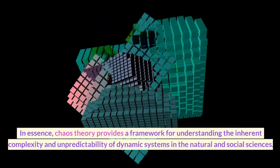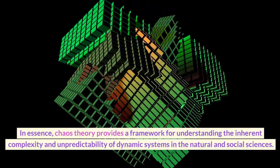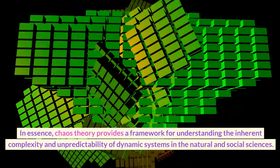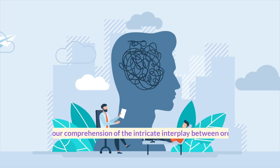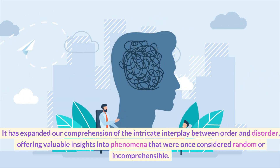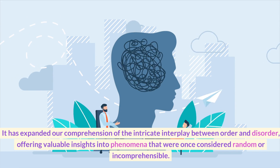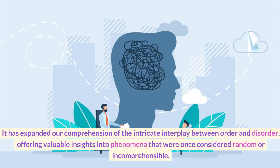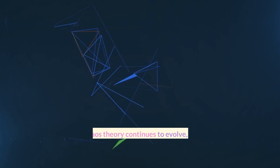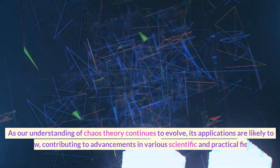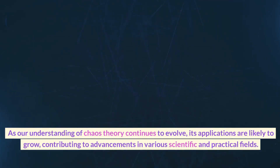In essence, Chaos Theory provides a framework for understanding the inherent complexity and unpredictability of dynamic systems in the natural and social sciences. It has expanded our comprehension of the intricate interplay between order and disorder, offering valuable insights into phenomena that were once considered random or incomprehensible. As our understanding of Chaos Theory continues to evolve, its applications are likely to grow, contributing to advancements in various scientific and practical fields.